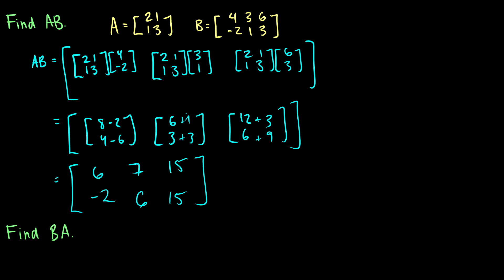So that is how we multiply matrices. And of course, what I should have done first is verified that these are compatible. A is 2 by 2 and B is 2 by 3 — these two match, so our resulting matrix will be 2 by 3. And yes, it is.